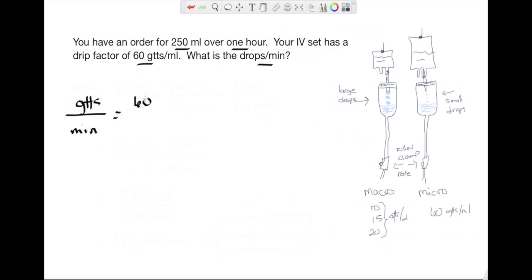Then I need to identify the key information. So what do I know? I know that I have a tube that it takes 60 drops to make one mL. I also know that I have an order of 250 mLs over one hour, and that will allow me to cross off the mLs. Remember, these are not fractions but these are relationships. And then I have to do a conversion. I know that in one hour there are 60 minutes. This will allow me to cross off the hours.